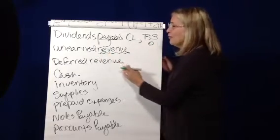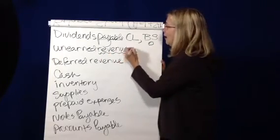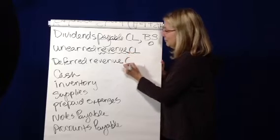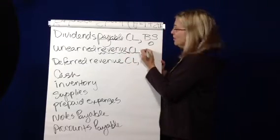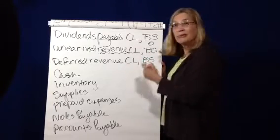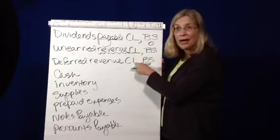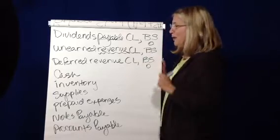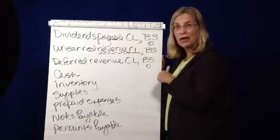So unearned revenue and deferred revenue are current liabilities. Because they're liabilities, they show up on the balance sheet. And because they're current liabilities, they're in the operating section of the cash flow statement.